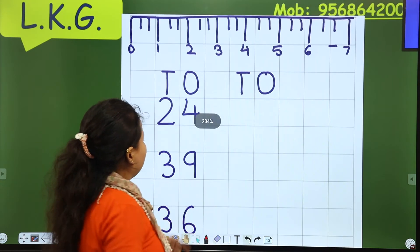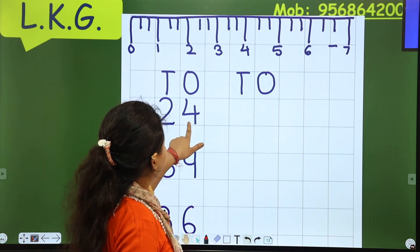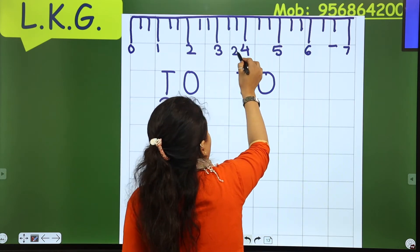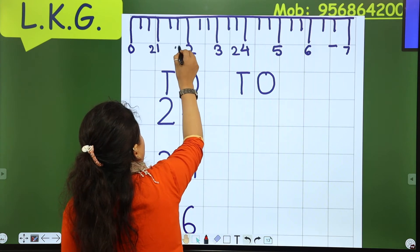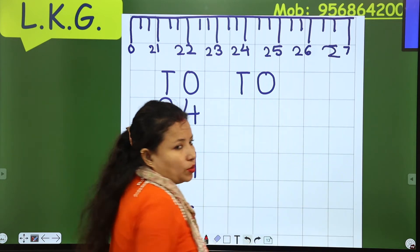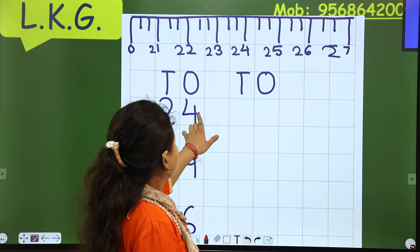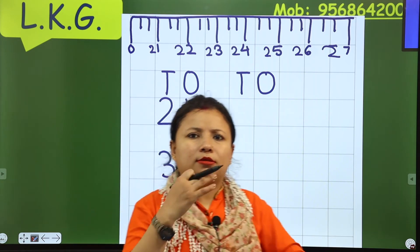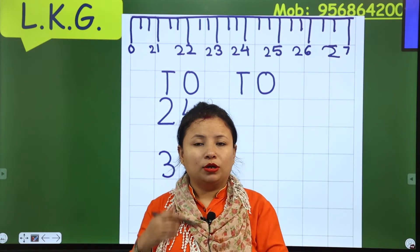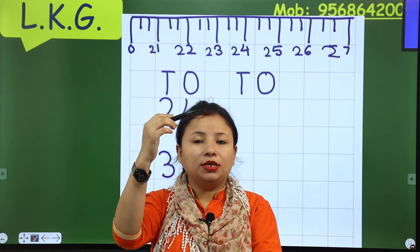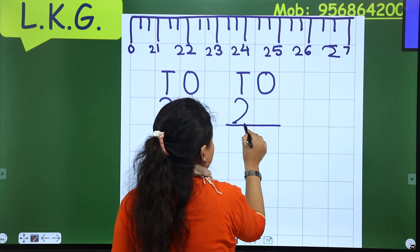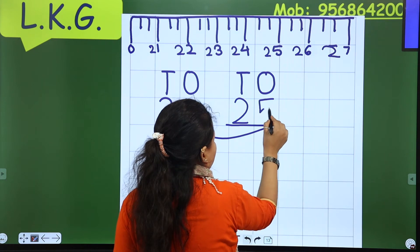Now, this number is twenty-four. Like here is twenty-four. If I write twenty-one, twenty-two, twenty-three, twenty-four, twenty-five, twenty-six, twenty-seven — so twenty-four is here. The next number after twenty-four is twenty-five. After four comes five, so twenty-five.